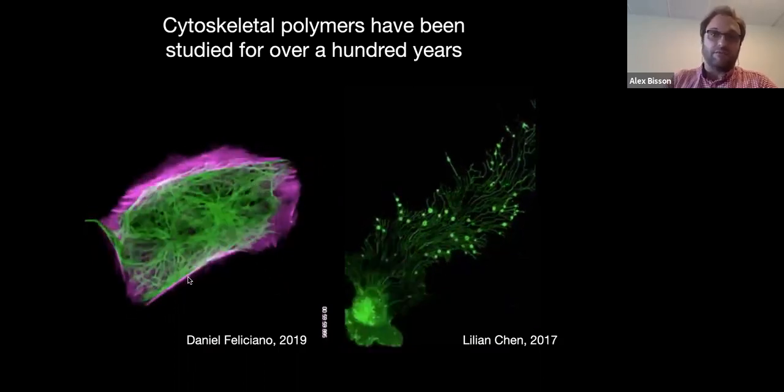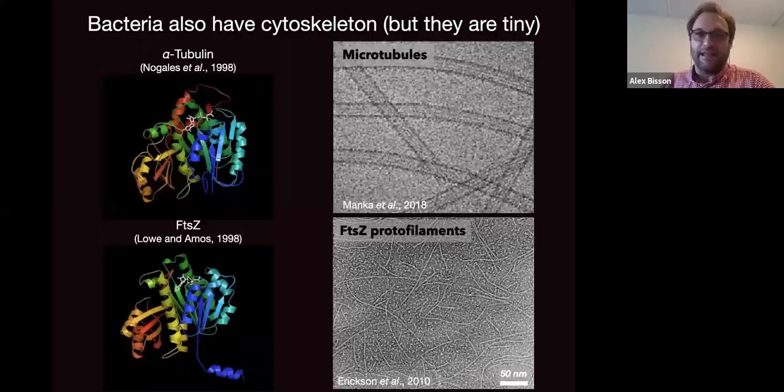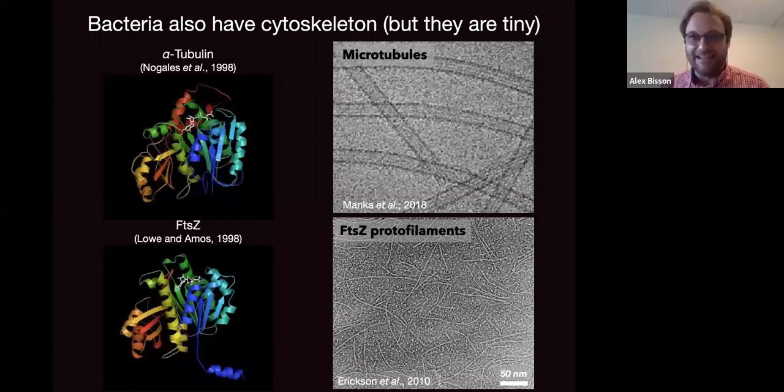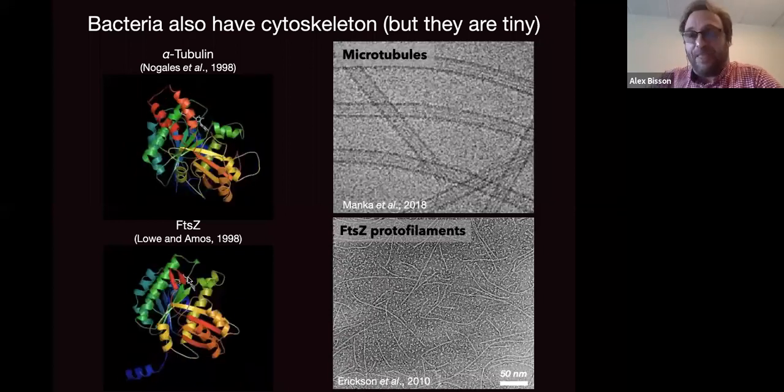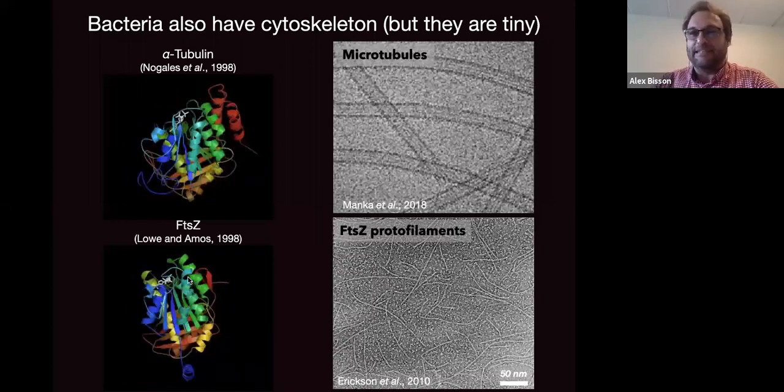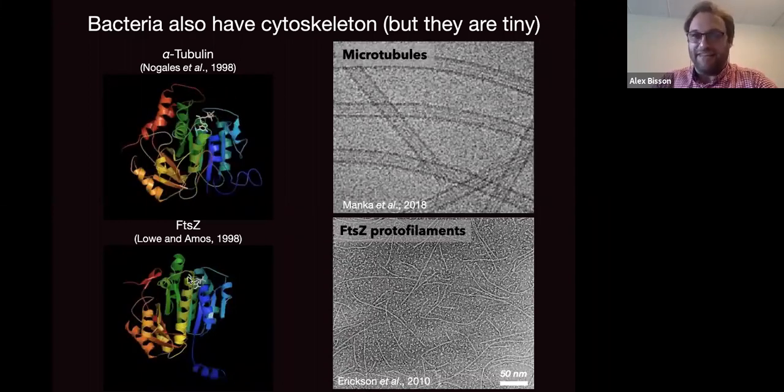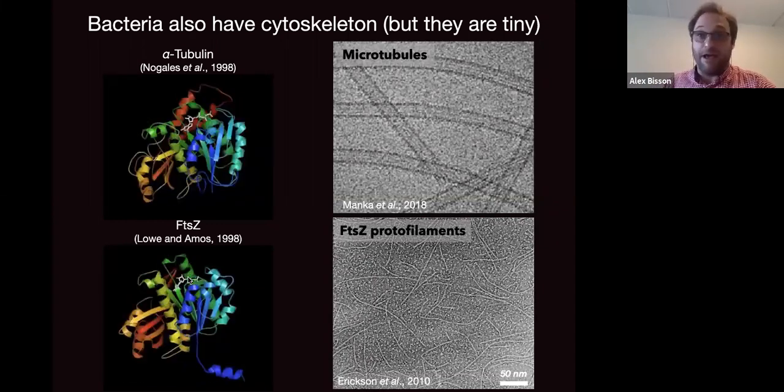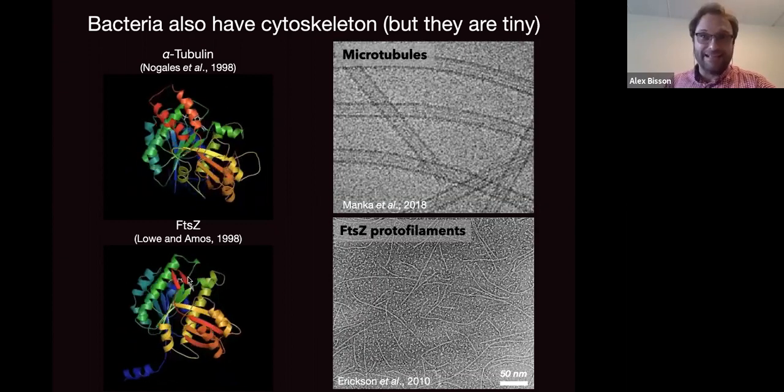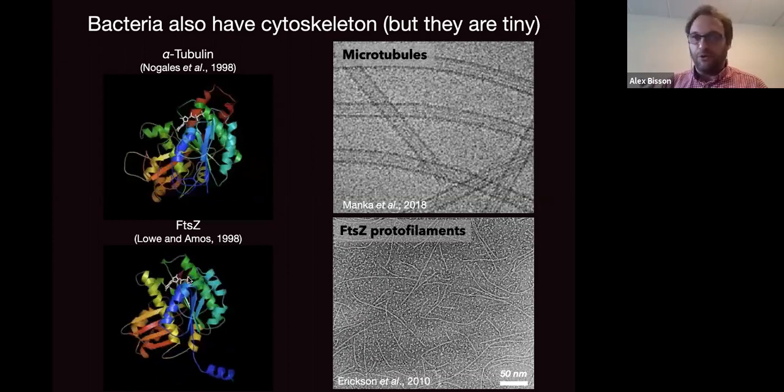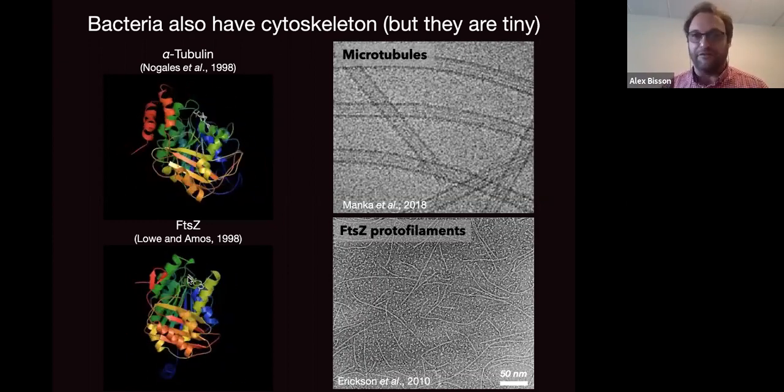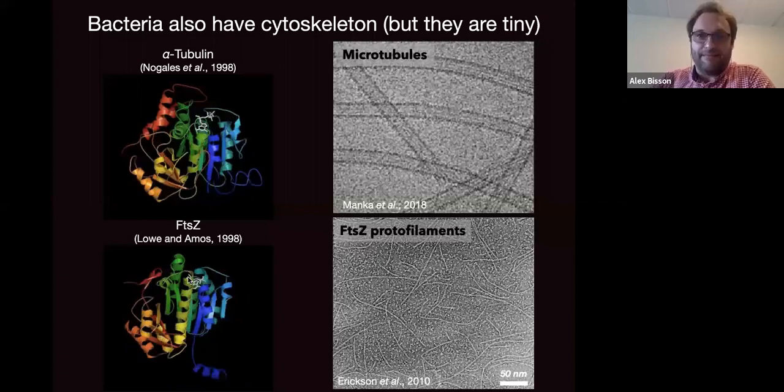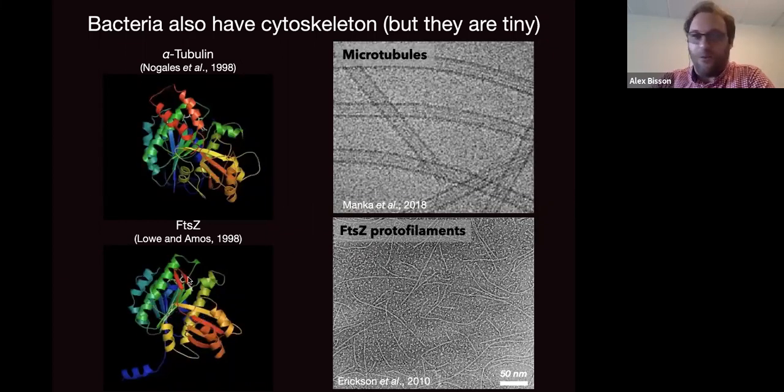Eukaryotic cytoskeleton has been studied for a long time. However, it's not been long since we identified and as a community agreed that bacteria also have cytoskeleton. The first evidence started in the mid-60s, 70s, and 80s. However, they were all genetic and very indirect. In the mid-90s, we had more biochemical and structural biology data showing that bacteria have tubulin, actin, and all sorts of different typical eukaryotic cytoskeleton elements.